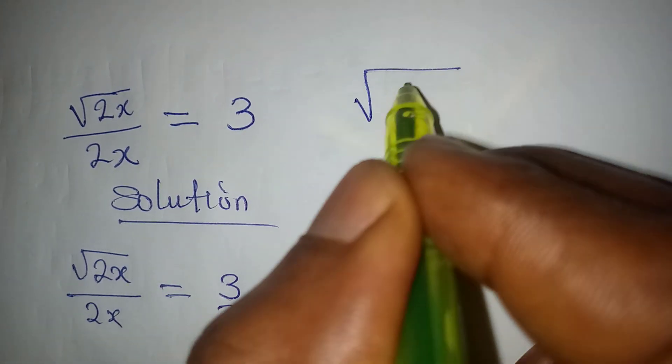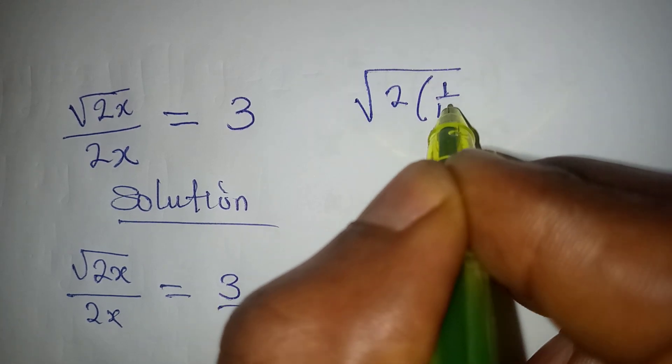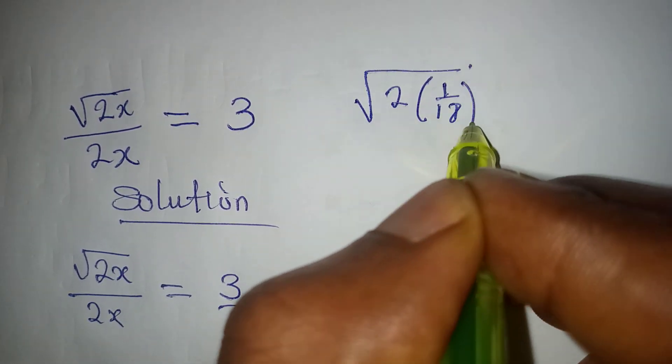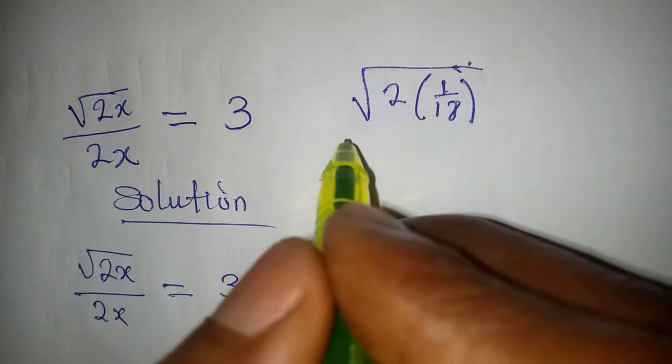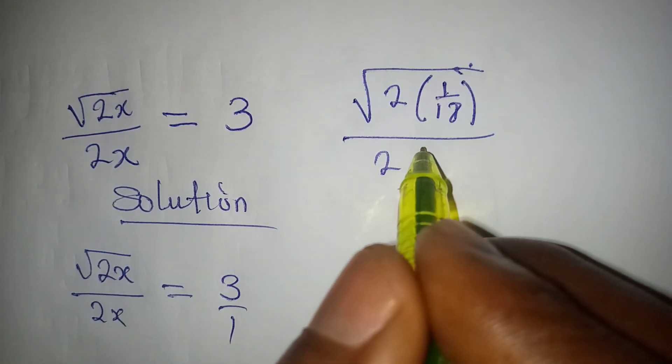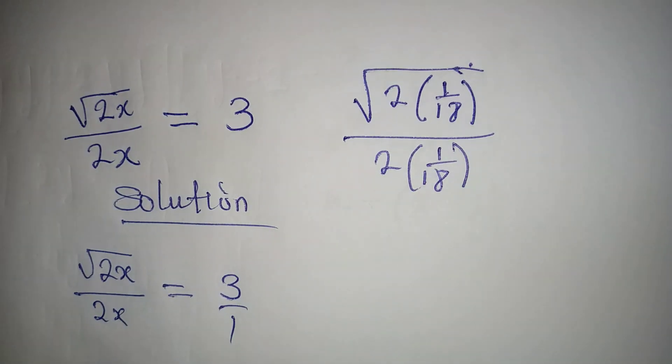Let's put it back. We're going to have square root of 2 into 1 over 18, over 2 into 1 over 18, because x is now 1 over 18. So the question is, will this give us 3? Let's continue.